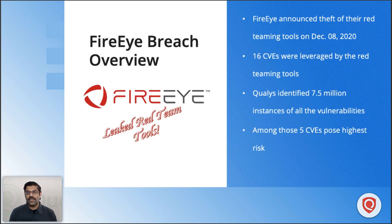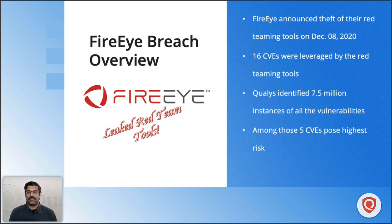FireEye was using these Red Team tools to conduct Red Team exercises in their client environments, leveraging 16 CVEs. Now that adversaries have access to these tools, the impact is going to be huge. Qualys found 7.5 million instances of vulnerabilities across these 16 CVEs, and five of the CVEs were more prevalent and posed very high risk to organizations.